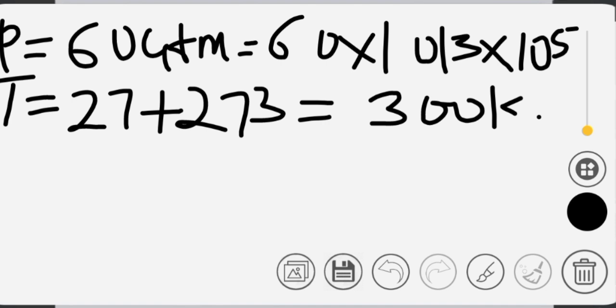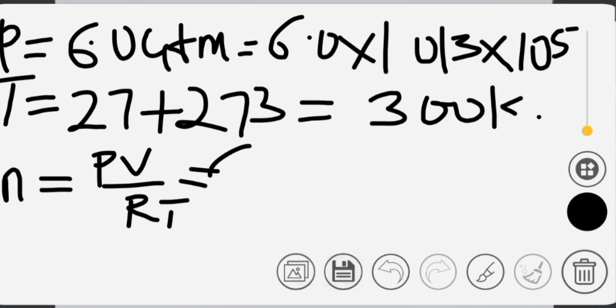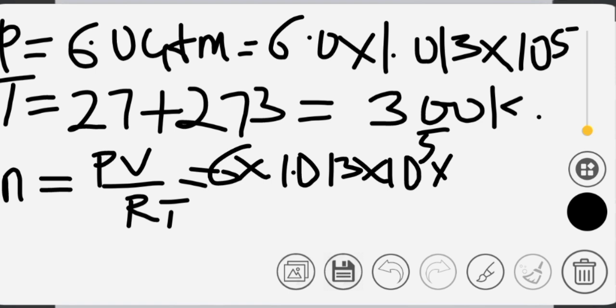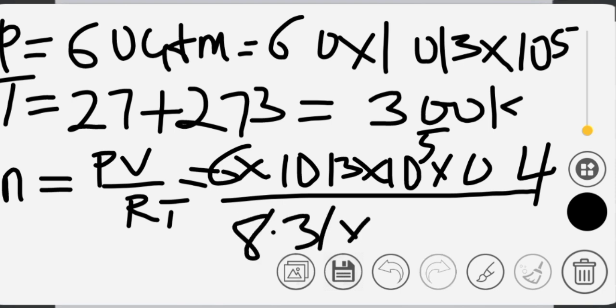If you substitute this to the formula, which is n equals PV over RT, P is 6.0 times 1.013 times 10 to the 5 times the volume, which is 0.4, then divided by R, which is 8.31 times 300, which is the temperature. So if you do that now, we are going to have an answer. Let's look at the answer to this.